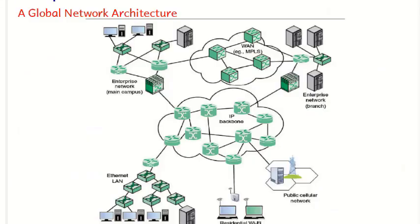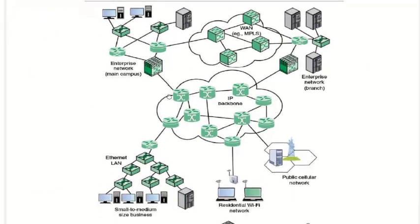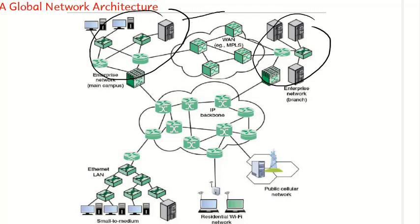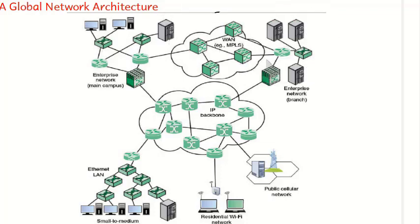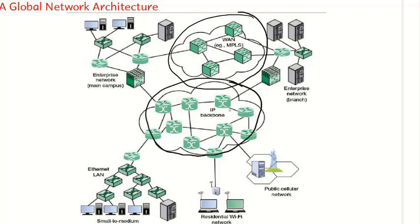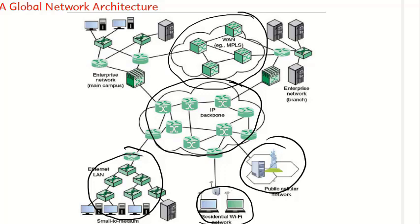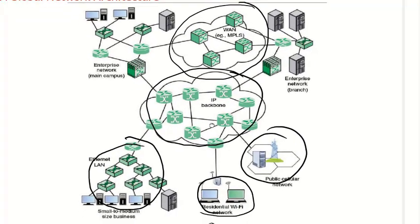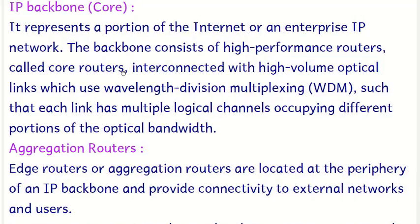This is an example of a global network architecture. We have an enterprise network on one side, and a branch of the same enterprise placed at a different geographical location, connected by a WAN. We also have an IP backbone, small and medium-sized businesses using network facilities, residential users connected via Wi-Fi, and a public cellular network. The diagram also shows symbols for core routers, edge routers, simple routers, and routers with firewall protection.